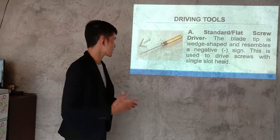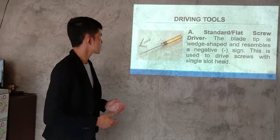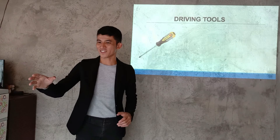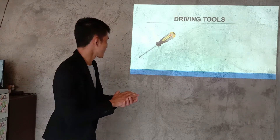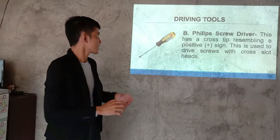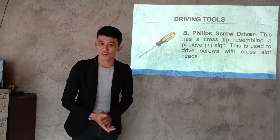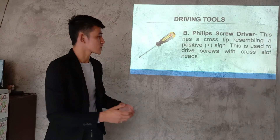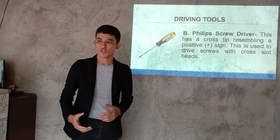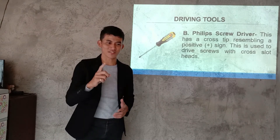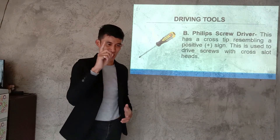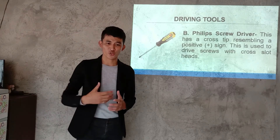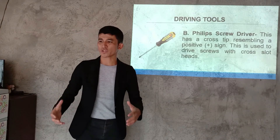The next example — what do you call that one? Yes, Friday. That is correct — that is the Phillips screwdriver. This has a cross tip resembling a positive sign. It is used to drive screws with a cross slot head.